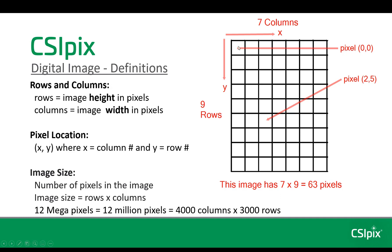So the location of this pixel is zero, zero. Because we start counting the columns here and we start with zero. So this would be column zero, one, two, three, four, five, six. For rows, we also start up here in the top left corner. And the rows would be numbered like this: zero, one, two, three, four, five, six, seven, eight.